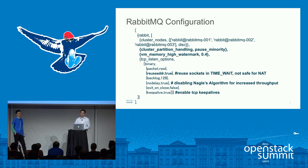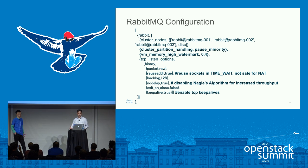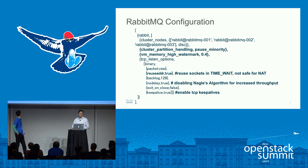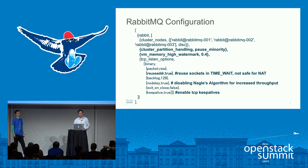Moving on to some RabbitMQ configuration options. For cluster partition handling, we set pause minority. We also make sure to set a high watermark — in our case we set it to 0.4, which allows 3.2 gigs of RAM for Rabbit. If Rabbit is consuming more than a gig of RAM, we're having issues, so increasing the high watermark just delays the inevitable. Some other important options are setting reuse address to true, which reuses sockets that are in time wait — though note this is not safe if you're NAT-ing connections to Rabbit. Also set no delay to true, which disables Nagle's algorithm for increased throughput.